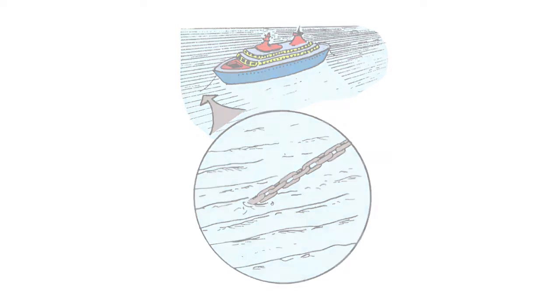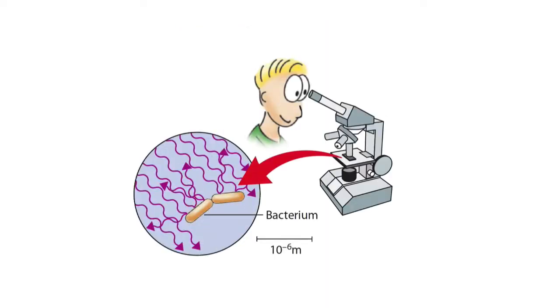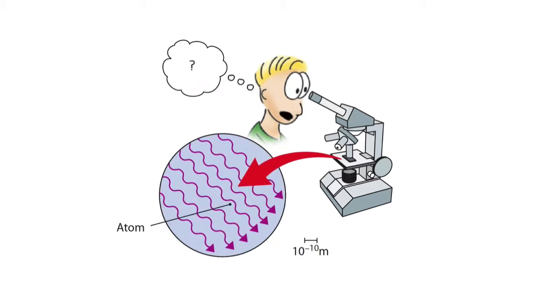Likewise, atoms are smaller than the wavelengths of visible light. Shine visible light on an atom, and it passes right on by. This is to say, atoms are impossible to see in the conventional sense, even with the most powerful optical microscope.